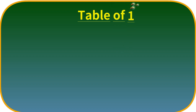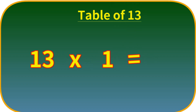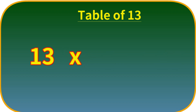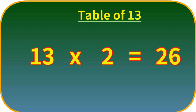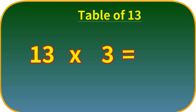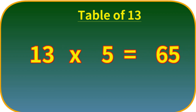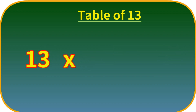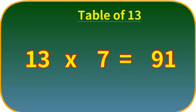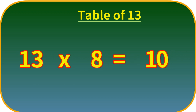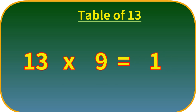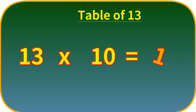Table of Thirteen. Thirteen ones are thirteen. Thirteen twos are twenty-six. Thirteen threes are thirty-nine. Thirteen fours are fifty-two. Thirteen fives are sixty-five. Thirteen sixes are seventy-eight. Thirteen sevens are ninety-one. Thirteen eights are hundred-four. Thirteen nines are hundred-seventeen. Thirteen tens are hundred-thirty.